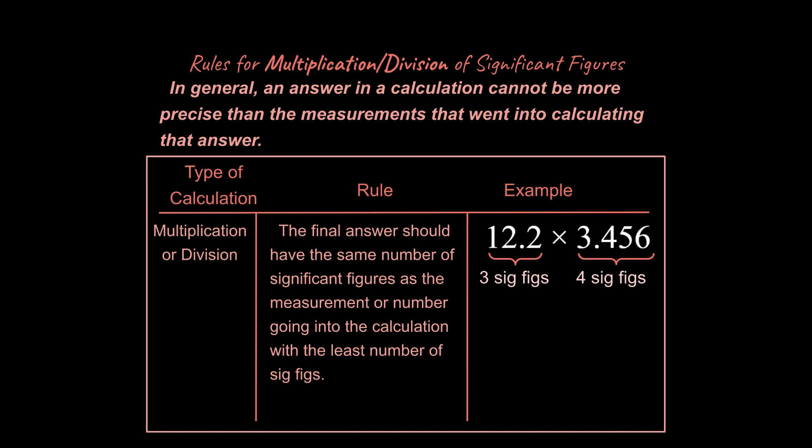Well, our least precise value is three sig figs. We have one measurement down to three sig figs, one down to four. So our answer can only be in three sig figs. So the calculator answer would look something like this. And we would round that off to three sig figs. So our final answer would look like this. That is how you're going to do multiplication division type problems.